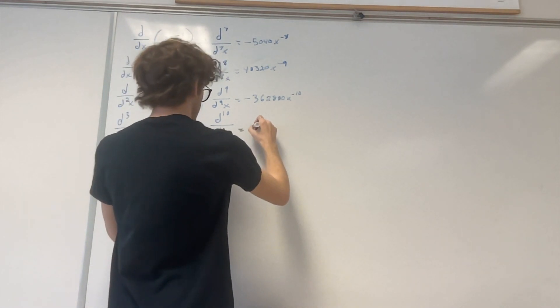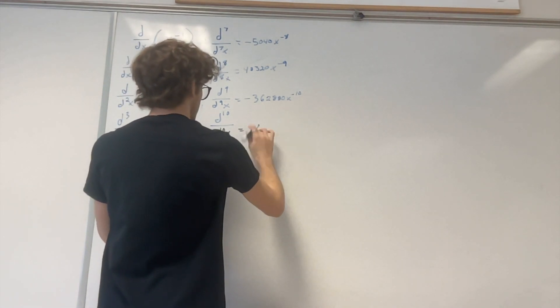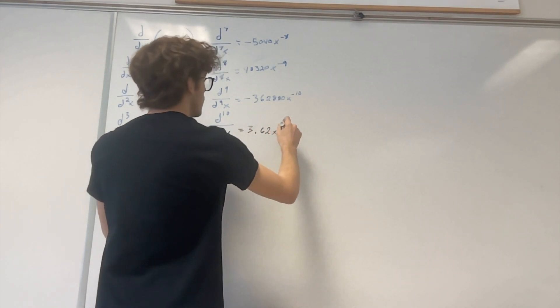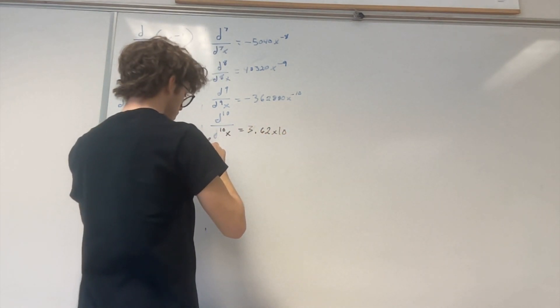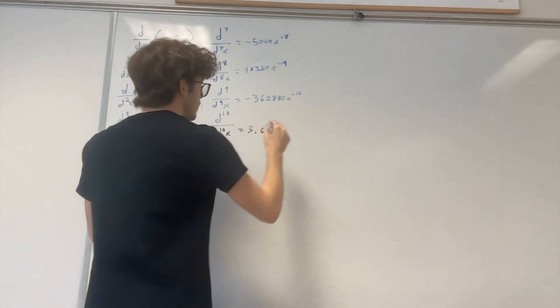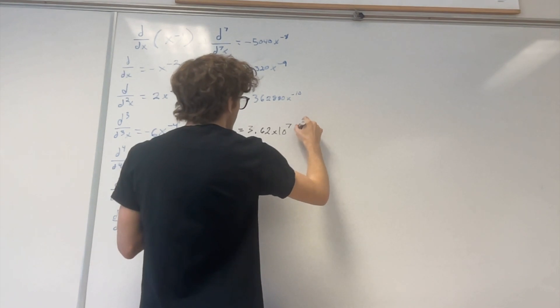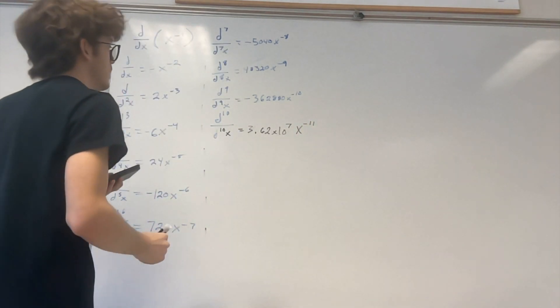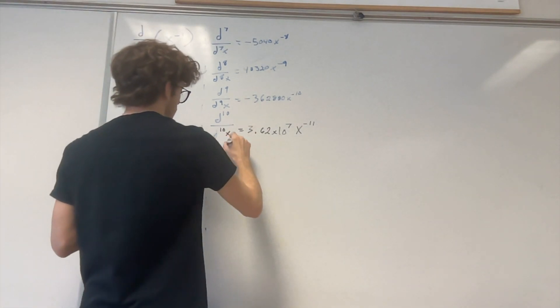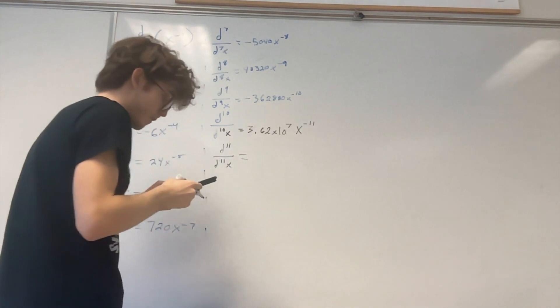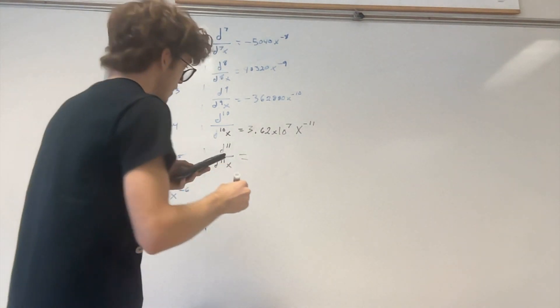Alright, so then this comes out to, we'll call it times 10 to the 7th, x to the negative 11th. What the fuck has my life come to? Negative 11, negative 3.99 times 10.